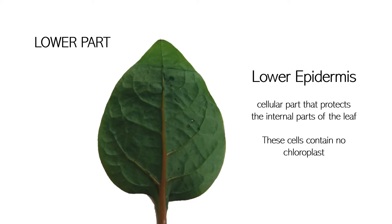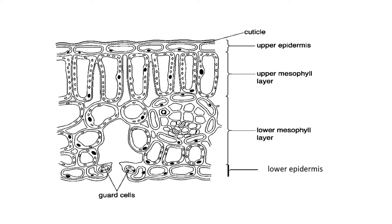The lower part of the leaf has a layer called the lower epidermis. This lower epidermis does not contain chloroplast, like the upper epidermis. They are also responsible for protecting the internal parts of the leaf from the lower side. In the cross-sectional cut, this is the lower epidermis.